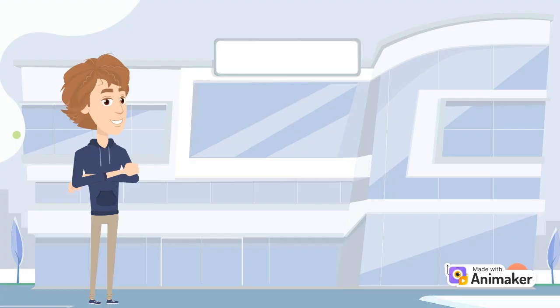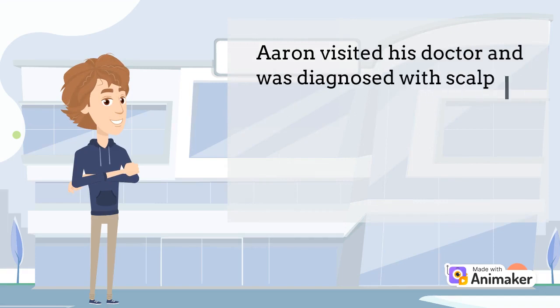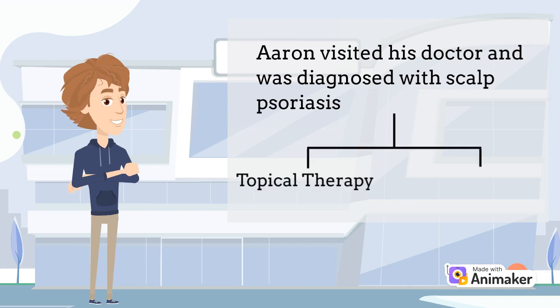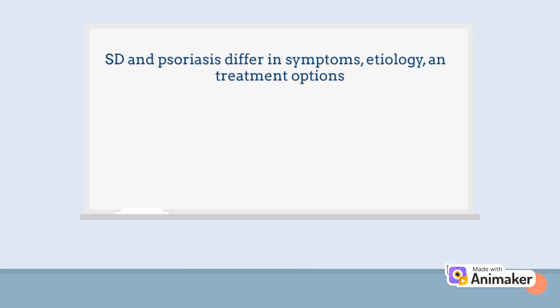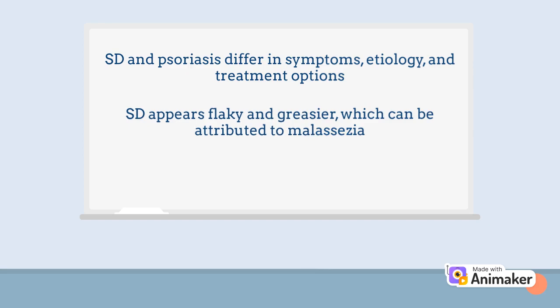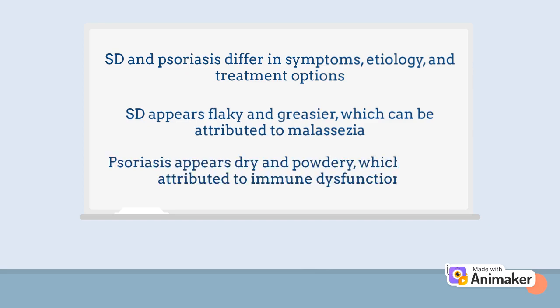Going back to our case study, Aaron visited his doctor and was diagnosed with scalp psoriasis. The doctor could put Aaron on various treatment options such as topical corticosteroids or phototherapy. Overall, while SD and psoriasis are similar skin conditions, both conditions differ in symptoms, etiology, and treatment options. The physical presentation of SD is flaky and greasy and is believed to be caused by malassezia, while psoriasis appears more dry and powdery and is an autoimmune condition.